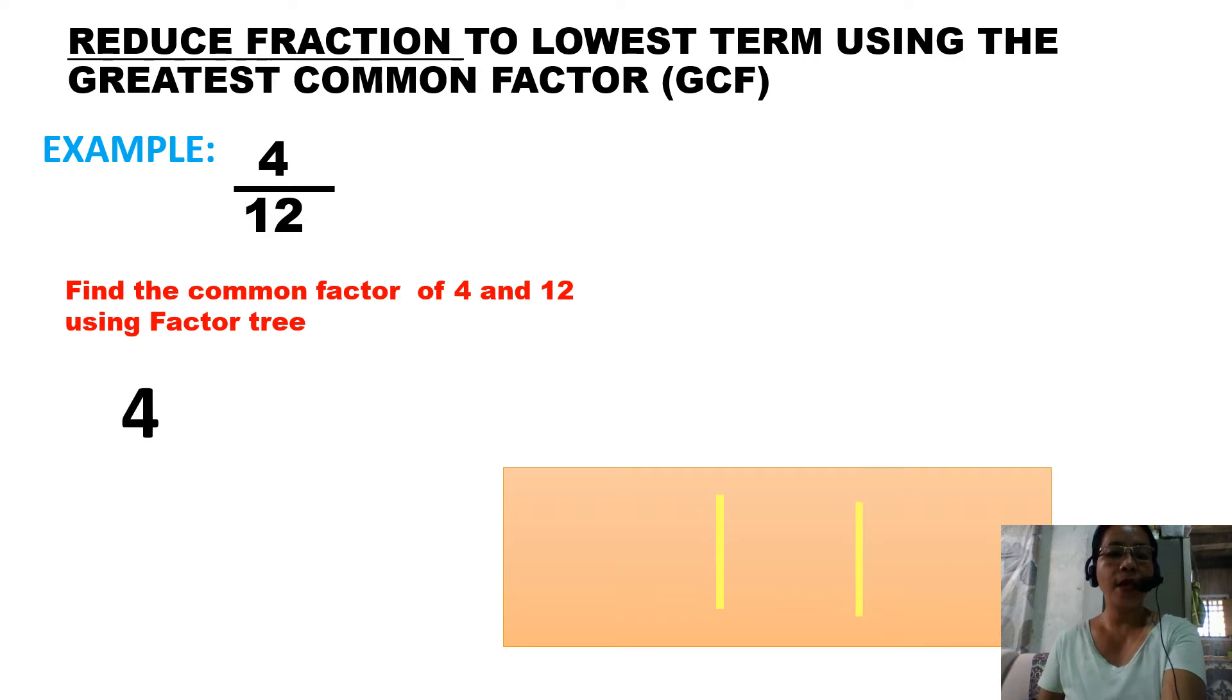Now let's have 4. What are the two numbers that when you multiply them you will get 4? We have 2 and 2. These are the two factors of 4. These two small numbers, we call them prime numbers. Since they are prime numbers, they cannot be divided further. So 4 is not a prime number because it can still be divided.